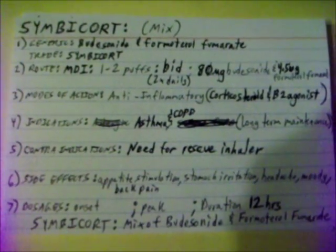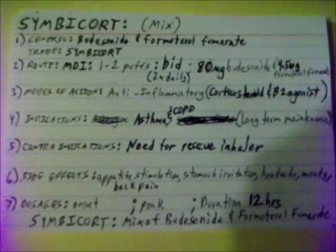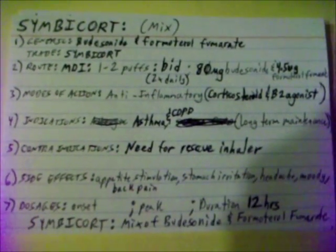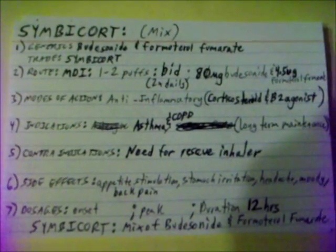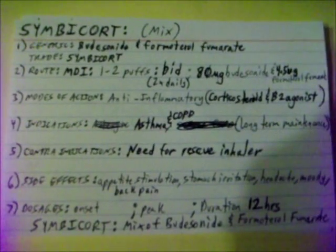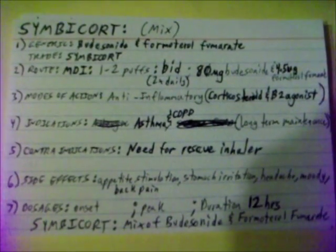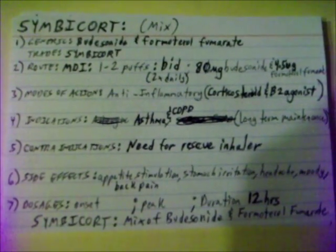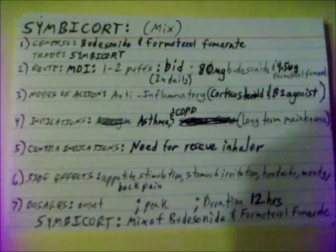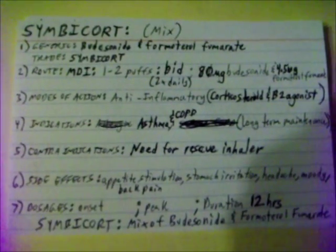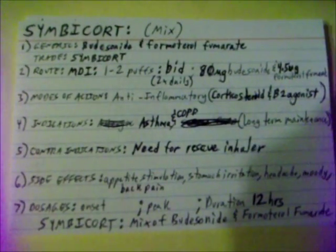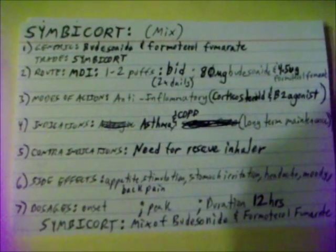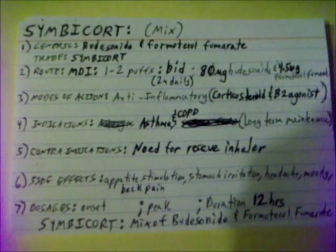Symbicort. Symbicort is a mixture of budesonide and formoterol fumarate. Trade name: Symbicort. Given via metered dose inhaler, 1 to 2 puffs twice daily — BID. Dose is 80 micrograms of budesonide and 4.5 micrograms of formoterol fumarate.